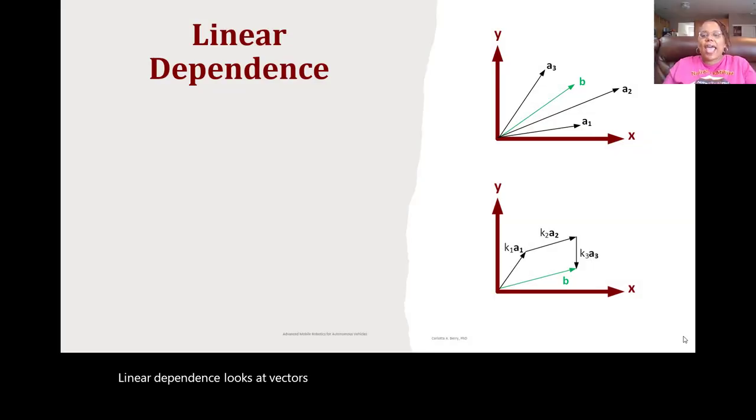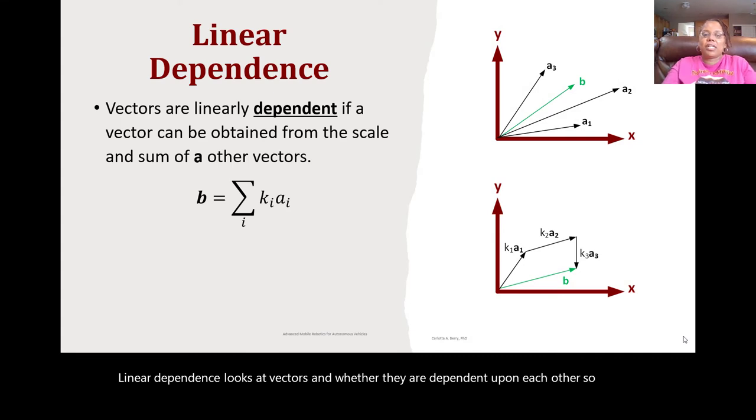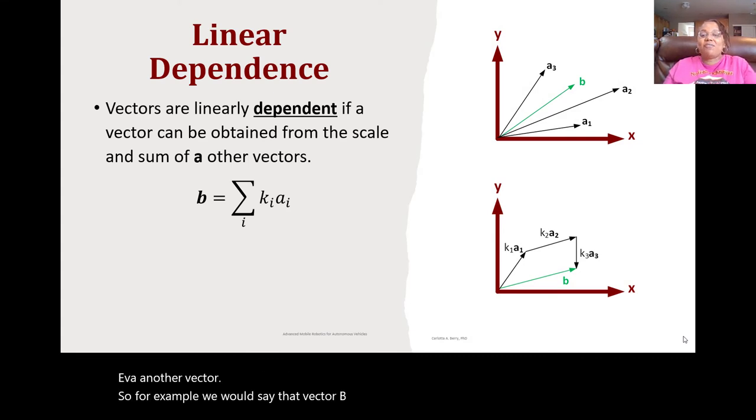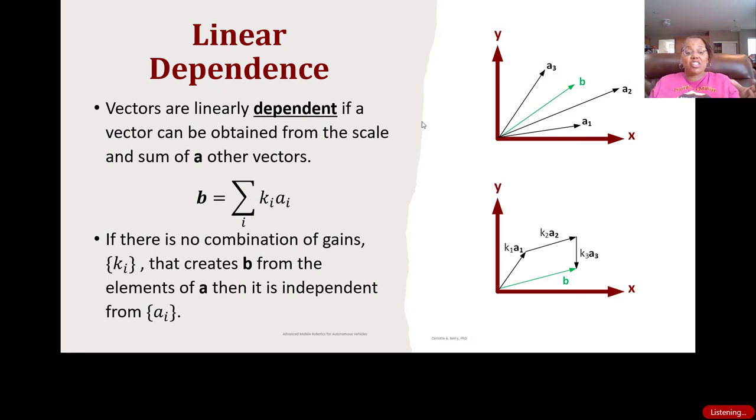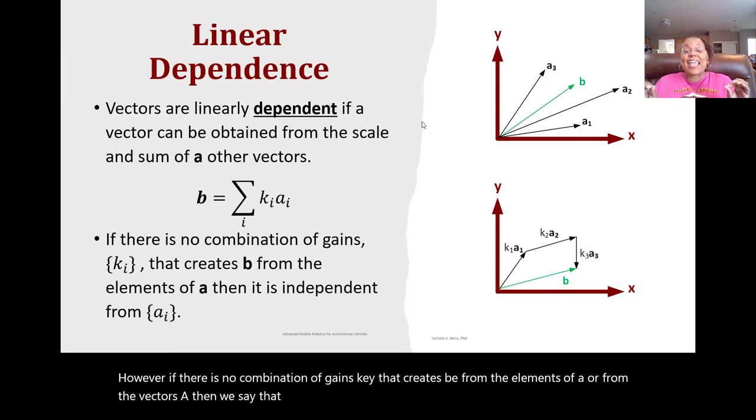Linear dependence looks at vectors and whether they are dependent upon each other. So for example, we would say that vector b is linearly dependent on vector a if b is created from scaling and summing of a vectors. So for example, b would be equal to the summation of i, k i, a i. So essentially, if I multiply all of vector a by k, and then add them together, and I can create b, then we say that they are linearly dependent. However, if there is no combination of gains k i that creates b from the elements of a, or from the vectors a, then we say that these vectors are linearly independent.